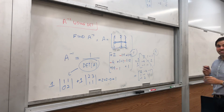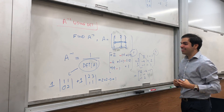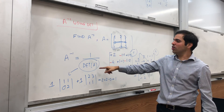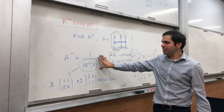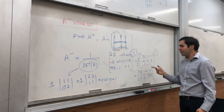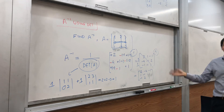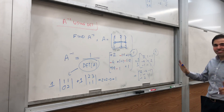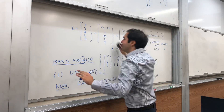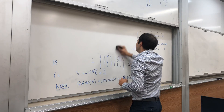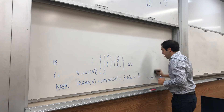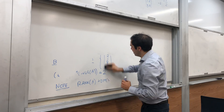Just a couple more applications. First of all, this also shows that if the determinant of A is 1 and A has integer entries, this formula shows you that the entries of A inverse must also be integers. I think that's a cool thing. Also, let me use that to show the formula for the inverse of a 2×2 matrix using this method.